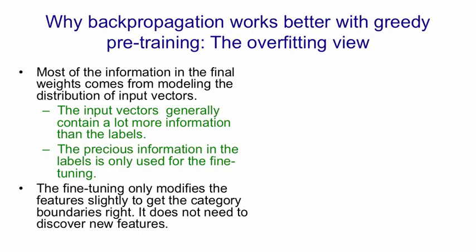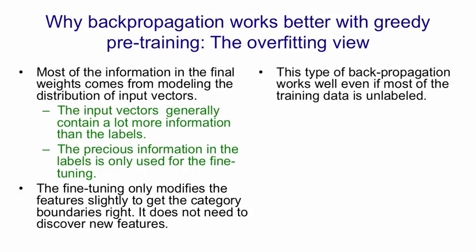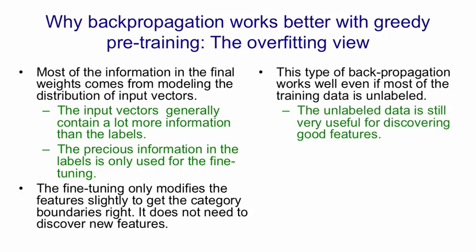The fine-tuning only makes the changes required to get the category boundaries in the right place. The important thing is that back propagation is not being required to discover new features, and so it doesn't need nearly as much labeled data. This type of learning works well when most of the data is unlabeled, because the generative pre-training can make use of all that data. The unlabeled data is still very useful for discovering good features.